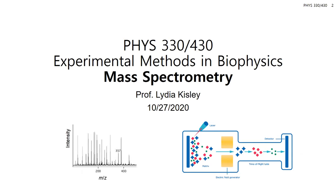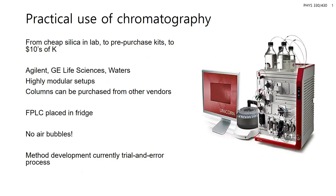Before getting into mass spectrometry, I want to do a quick recap since last week we didn't get to talk about the practical use of chromatography. I have an example FPLC shown here. The mobile phases are in bottles on top being fed into the chromatography instrument. The bulk of what's inside are the pumps controlling the mixing of the mobile phase for gradient elutions. The workhorse is the column, which you can switch out, and somewhere here is where you inject your liquid sample.